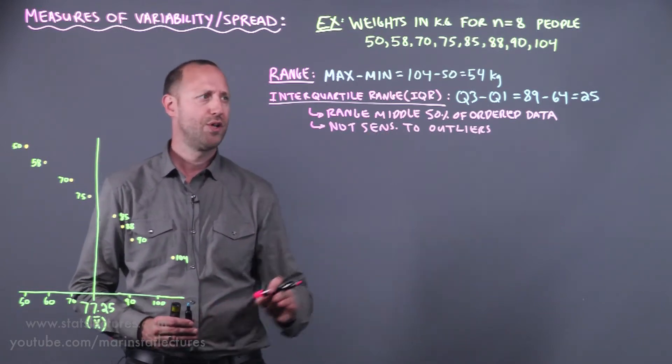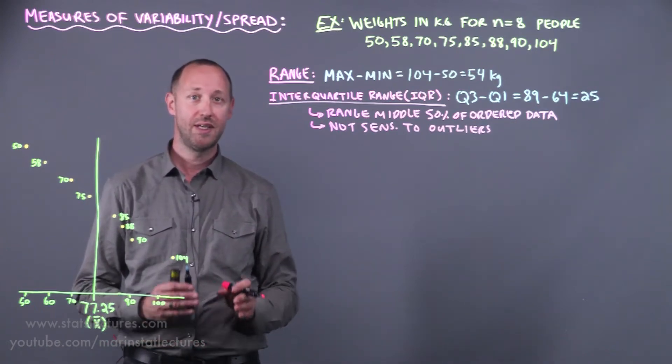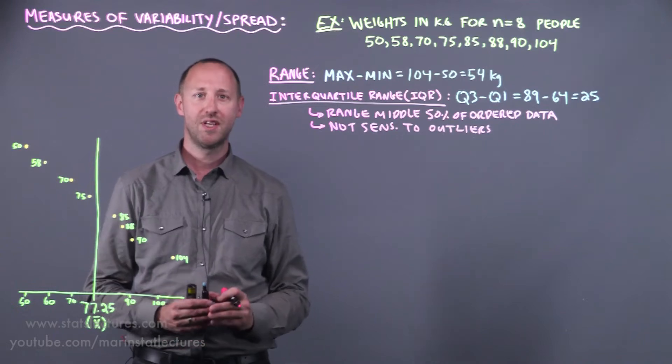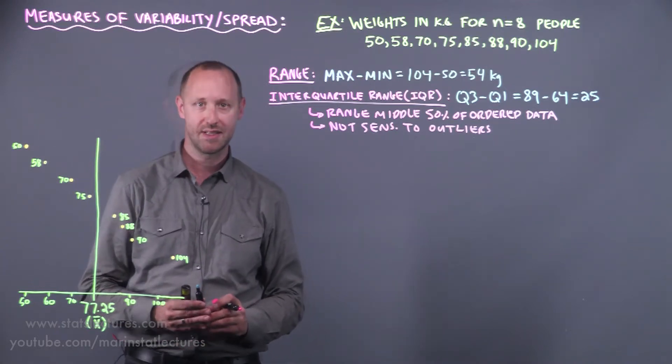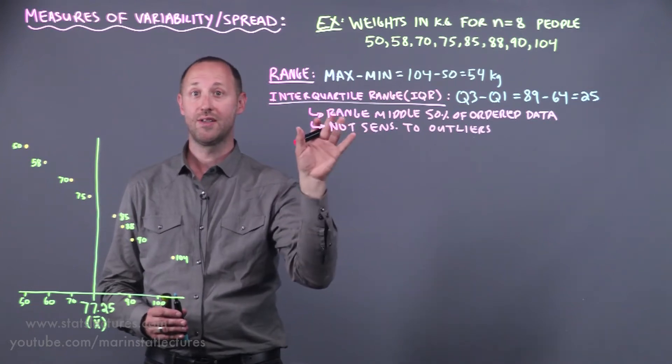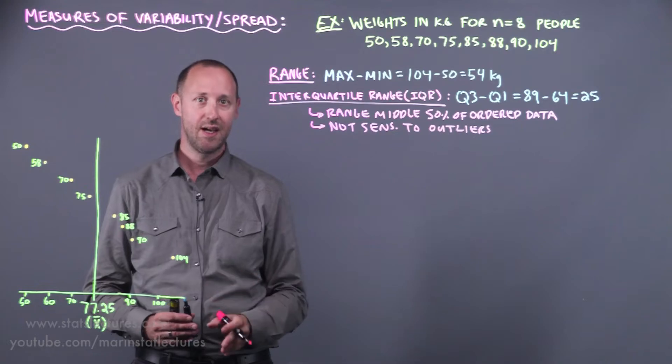When talking about quartiles, percentiles, quantiles, there's slightly different ways to estimate these. Let's not get too caught up on the exact calculation of Q1 and Q3, but focus on what is the interquartile range and what is it trying to estimate. If we're using the IQR as our measure of spread we should pair that with the median as our measure of center.